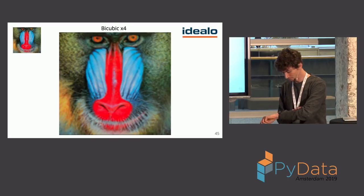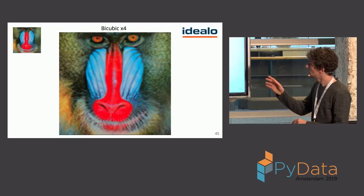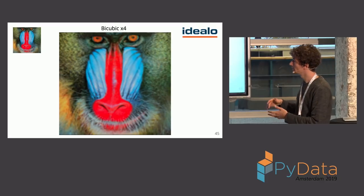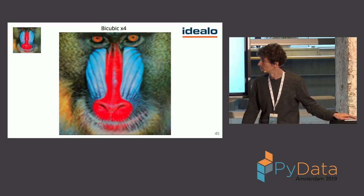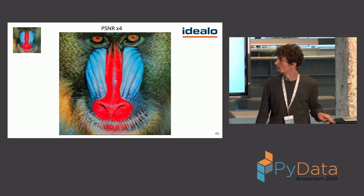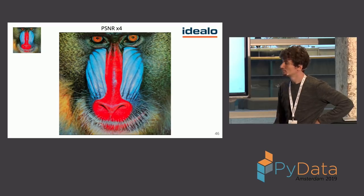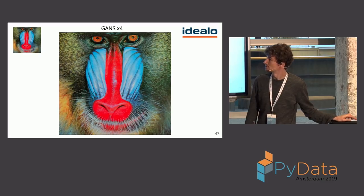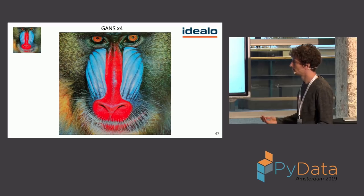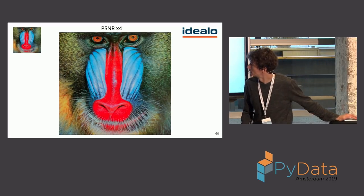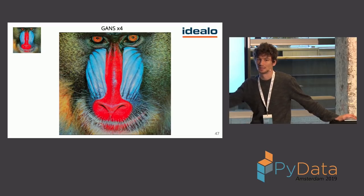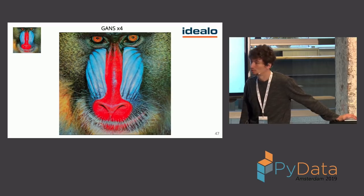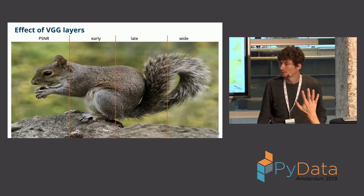On the classic baboon benchmark image with 4× upscaling, the bicubic baseline is visibly blurry. The pixel-wise loss model improves on that, and adding GANs introduces details that weren't distinguishable before — learned from the dataset and applied to this image, reaching a level of realism beyond what the pixel-wise loss can achieve.